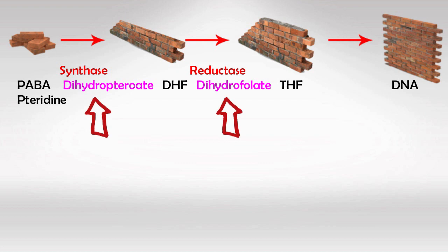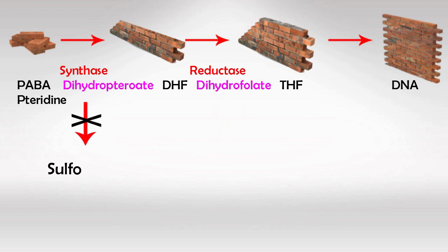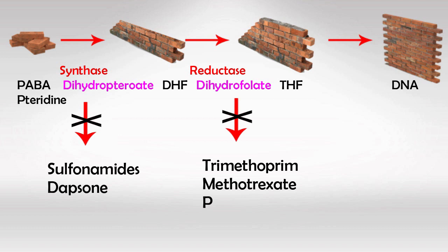If we inhibit either of these enzymes, we will inhibit DNA synthesis. Drugs that inhibit synthase are sulfonamides and dapsone. Drugs that inhibit reductase are trimethoprim, methotrexate, and pyrimethamine. If we really want to kill bacteria, we can use two different drugs from these two groups to achieve a sequential block of DNA synthesis.